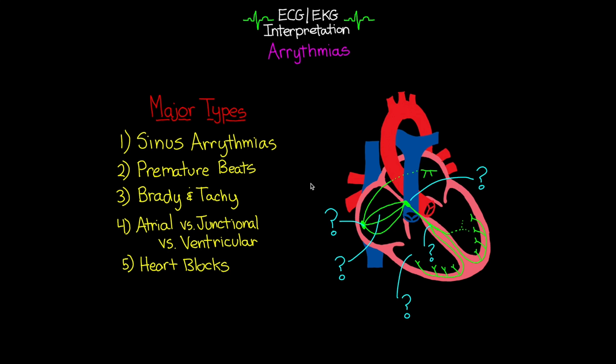Welcome back. This is the fifth lesson in this series covering EKG and ECG interpretation, and we're going to continue on with our coverage of arrhythmias. In the last lesson, we took a look at the atrial and junctional rhythms, which I will link to above. But in this lesson, we're going to take a look at those various ventricular rhythms, and these ones are especially important because a few of these can be pretty serious for your patient.